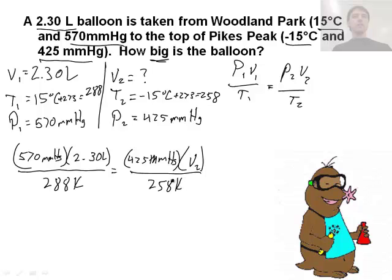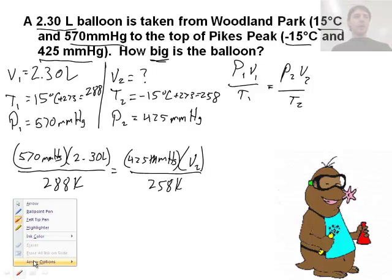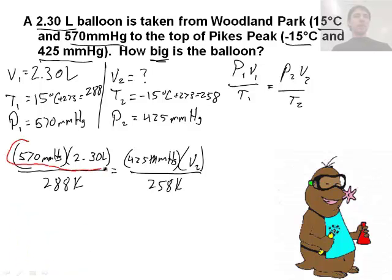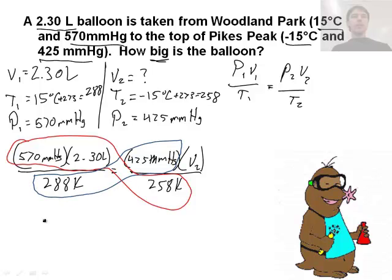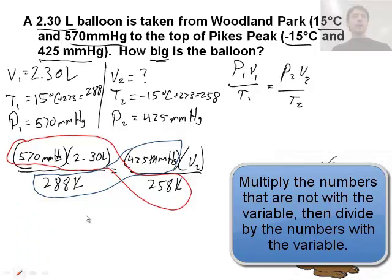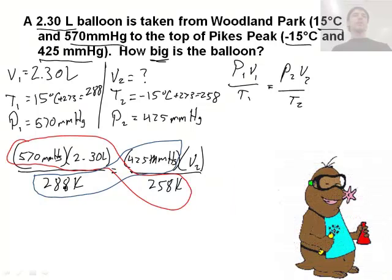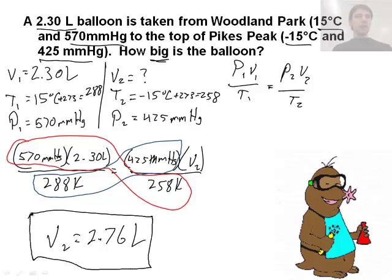The easiest way is to cross multiply and solve for v2. Here's a trick: multiply the ones that are not with the variable together - 570, 2.3, and 258 - then divide by 288 and 425. So 570 times 2.3 times 258 divided by 288 divided by 425 gives us our v2, and v2 is 2.76 liters. Plug and chug, that's all you have to do.